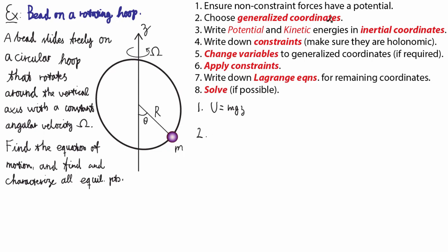Then we should choose the generalized coordinates. Since this hoop, when it rotates, traces out a sphere, it's probably a good idea to choose spherical coordinates R, Theta, and Phi, with the difference here that I've chosen Theta to be measured from the negative z-axis.